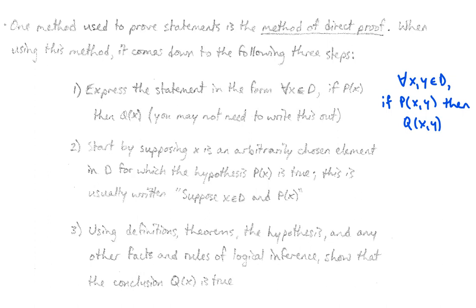So once you've done that, if you feel that you need to, step number two is to begin writing your proof, and you start writing your proof by supposing x is an arbitrarily chosen element in D for which the hypothesis or hypotheses of P(x) is or are true. Once again, maybe you're arbitrarily choosing two values, x and y, in this set D.